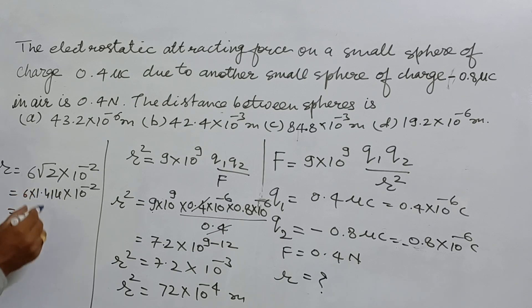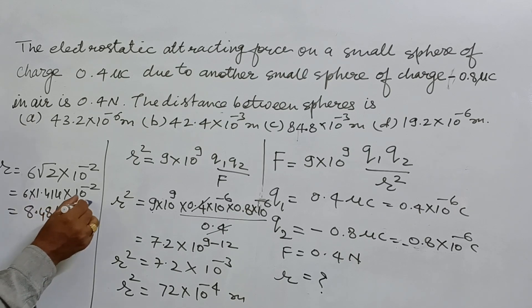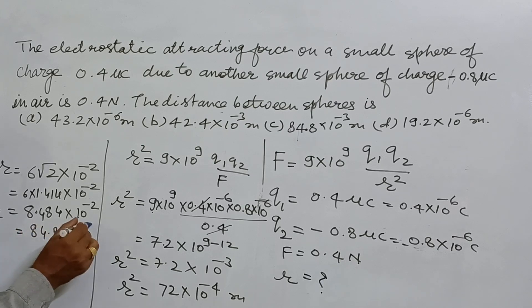...this gives 84.8×10⁻². Now if you calculate finally, we have 10⁻³ meters, so r will be 84.84×10⁻³ meters.